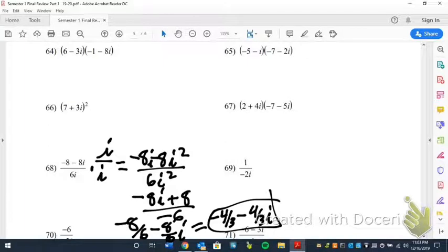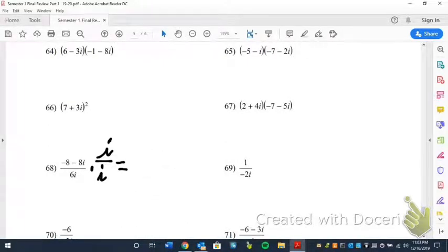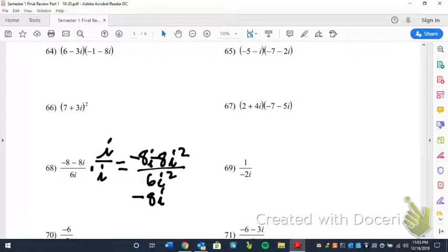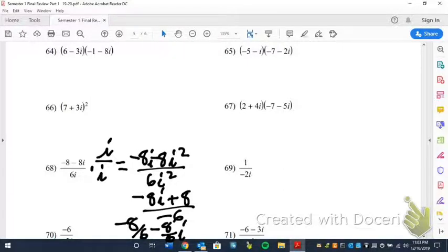Let's go on here. Okay, so for these, what you want to do is if it's just a monomial on the bottom, you just multiply by i over i. And that's going to get rid of the i on the bottom because you're going to have an i squared. The i squared is turning to negative 1. So end up with negative 8i plus 8 over negative 6. Remember, we always want to write that in A plus BI format. So we switch them around and reduce.